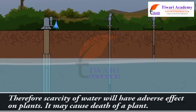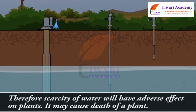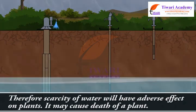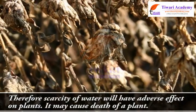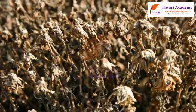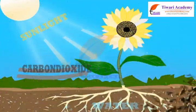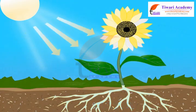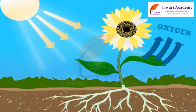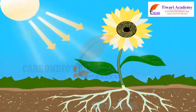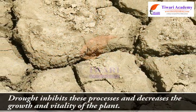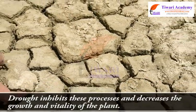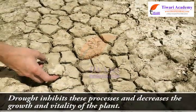Therefore, scarcity of water will have adverse effects on plants. It may cause the death of a plant. Plants use water for photosynthesis and temperature regulation. Drought inhibits these processes and decreases the growth and vitality of the plant.